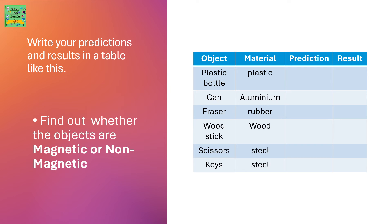The plastic bottle is made of plastic. The can is made of aluminium. The eraser is made of rubber. The wood stick is made of wood. The scissors are made of steel. The keys are made of steel.